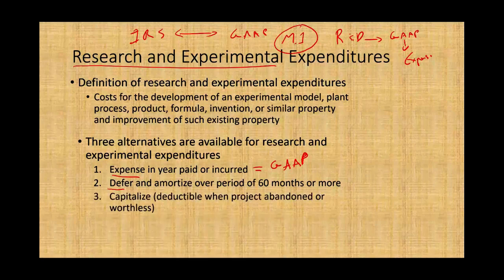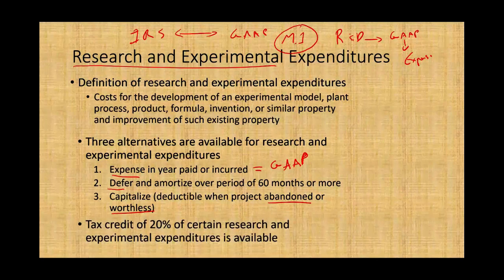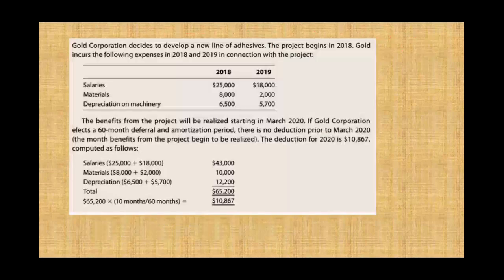With the capitalize option, once you notice that the project is abandoned or worthless — for example, you were working on a drug but the FDA did not approve it — all the work is worthless. So you have three options: capitalize, expense over a period of time, or expense immediately. Also, there is a 20% tax credit on certain research and experimental expenditure available, but we'll discuss this in a different chapter when we cover tax credits.